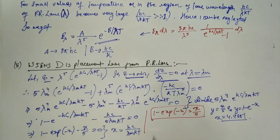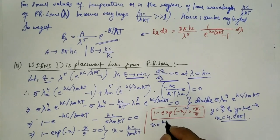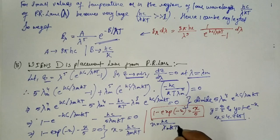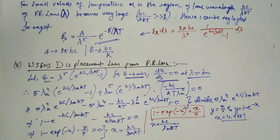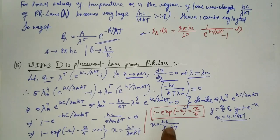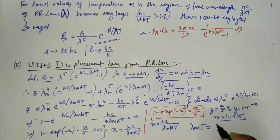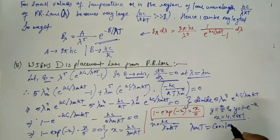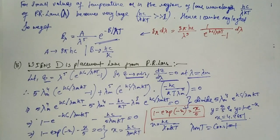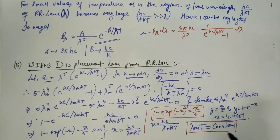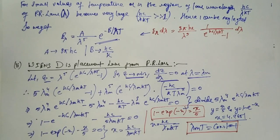Since x = hc/λ_m kT = 4.9651, we get λ_m · T = hc/(k · 4.9651) = constant. This result — that λ_m · T = constant — is Wien's displacement law, which we have now derived from Planck's radiation law.